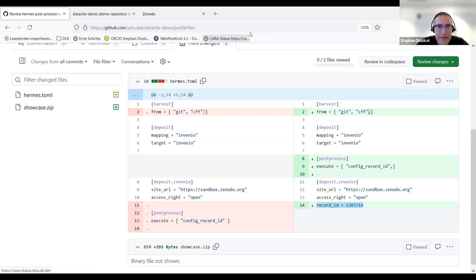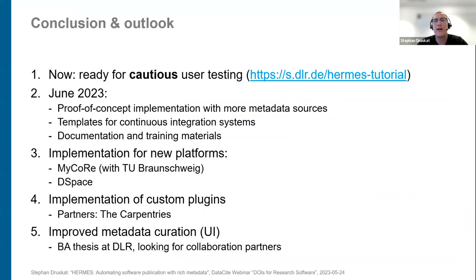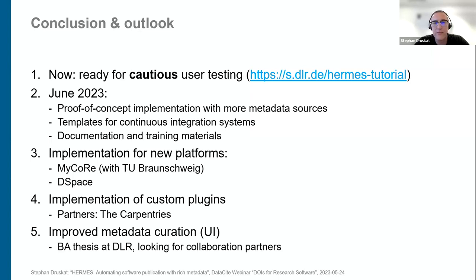We are now ready for very cautious user testing. This is still proof of concept, so read through the tutorial carefully. It should already work with Zenodo proper if you use GitHub and Zenodo. We'll be finished with the project by end of June and have the proof of concept implementation ready with more metadata sources, more harvesting from different sources, and we will provide templates not just for GitHub Actions but also for other continuous integration systems.